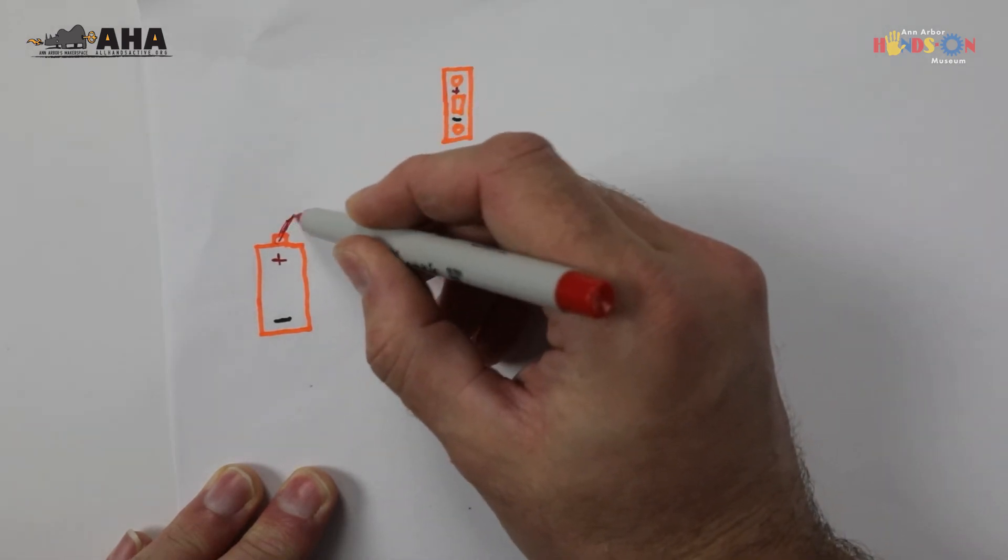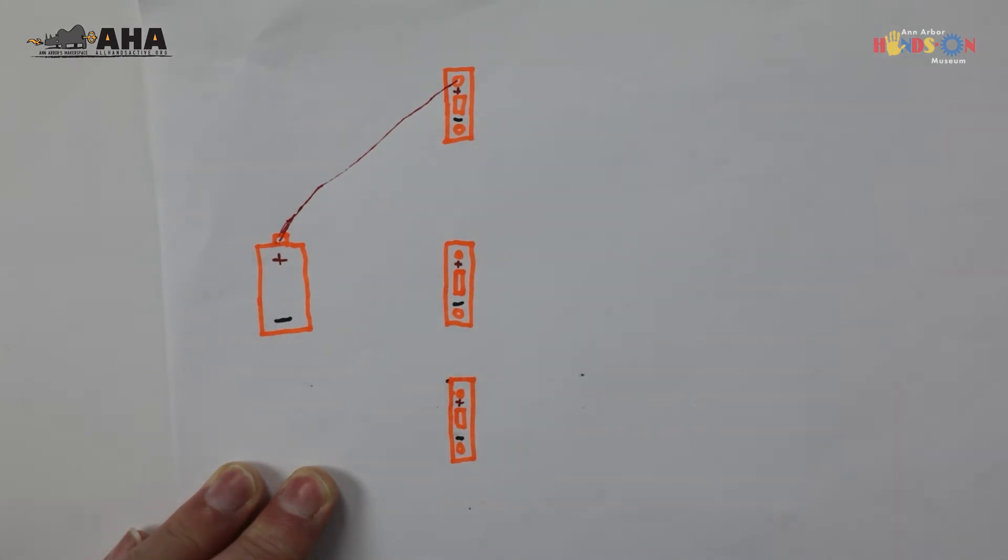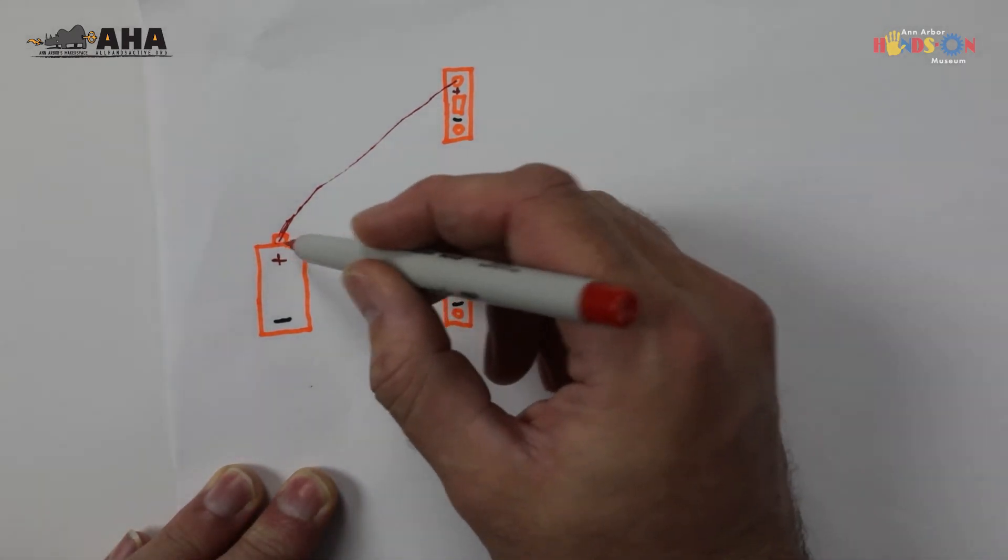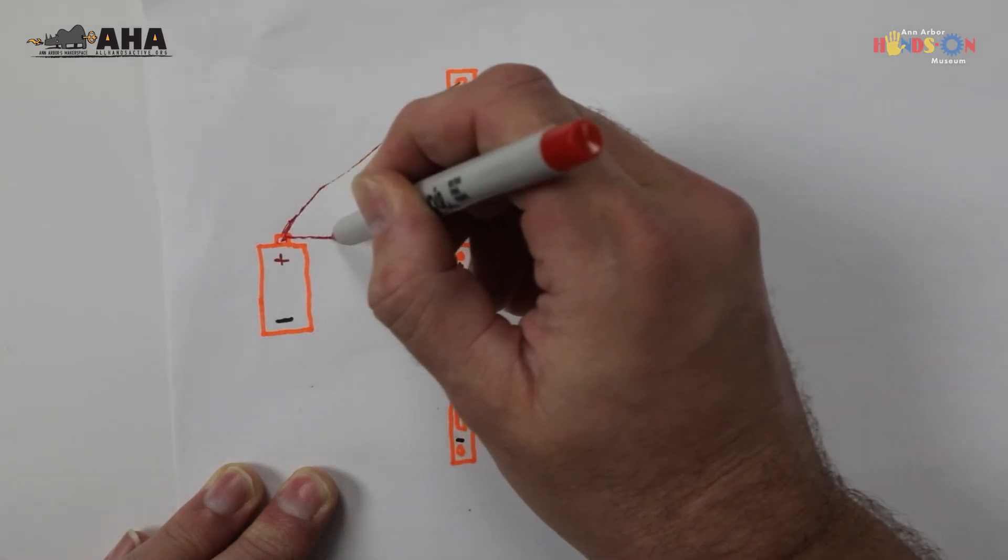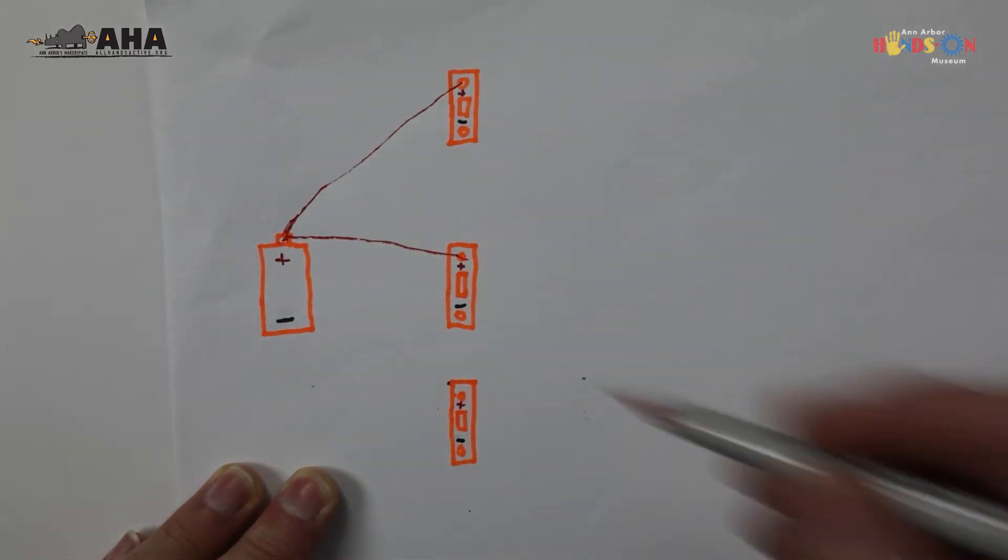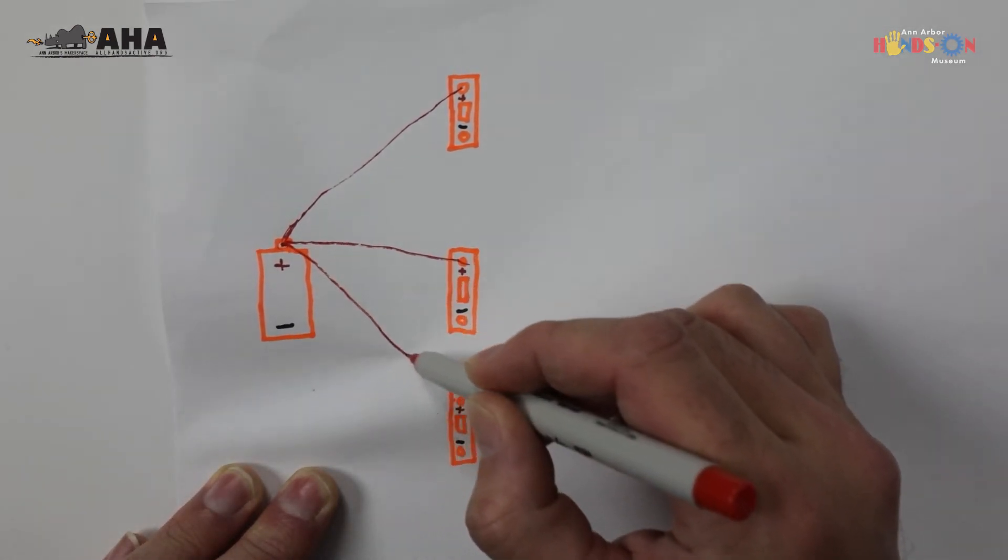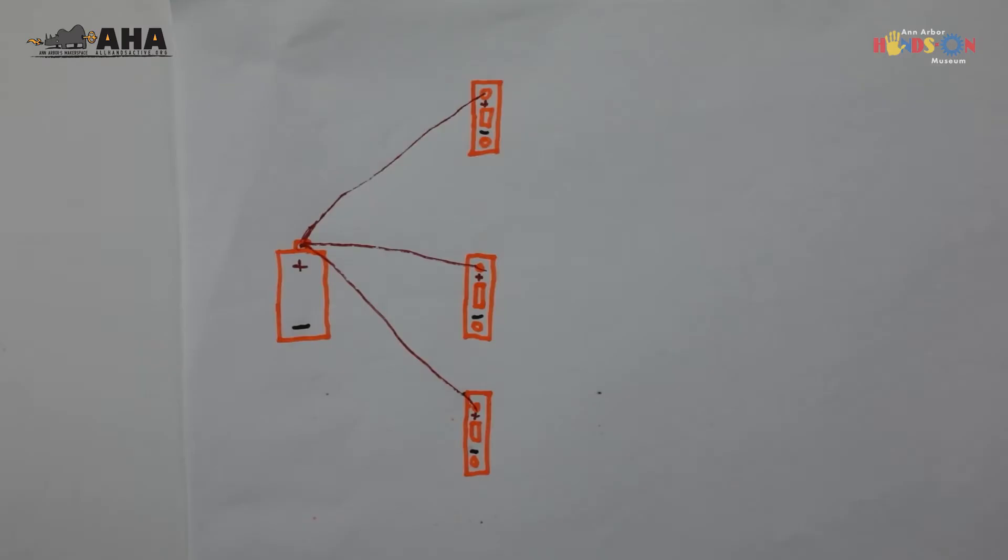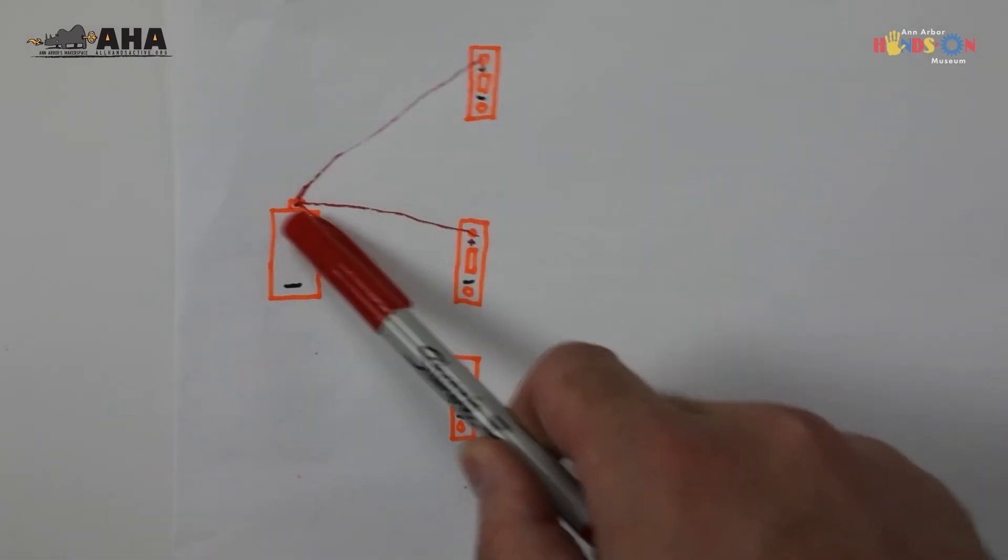So get my red marker here. We're going to connect one connection from the positive to one connection on the LED, another connection from the positive to the other connection on another LED, and finally go down to the third one here. So we have three positive connections—these are all parallel connections because there's multiple ways for electricity to travel.